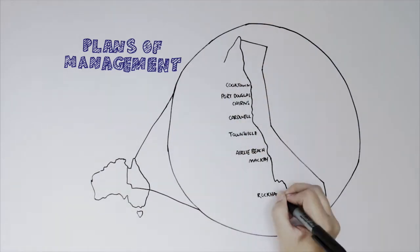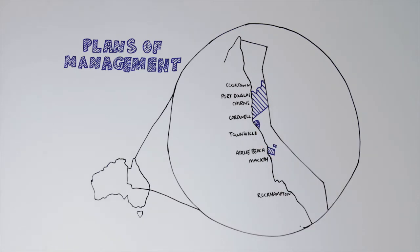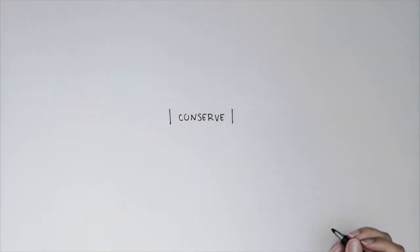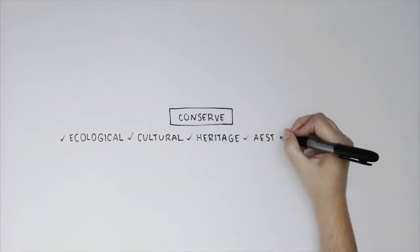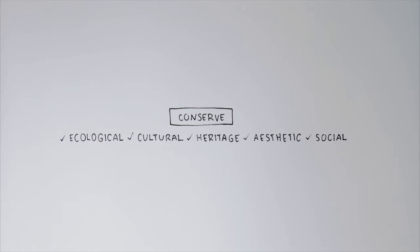Plans of management exist in the Cairns and Port Douglas area, Hinchinbrook and Whitsundays marine regions. The plans help conserve the ecological, cultural, heritage, aesthetic and social values in that particular region.